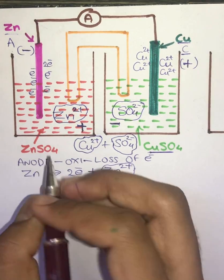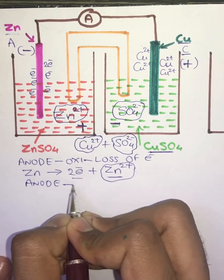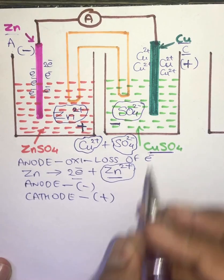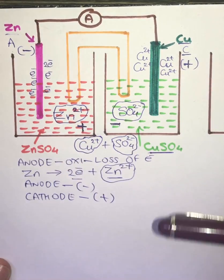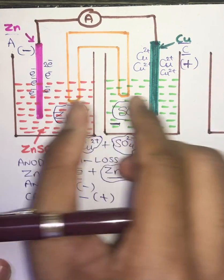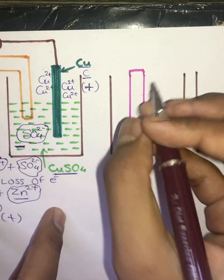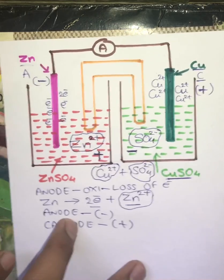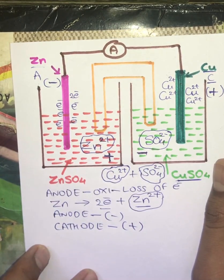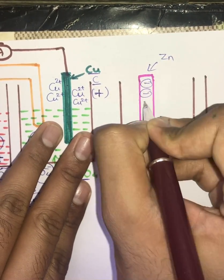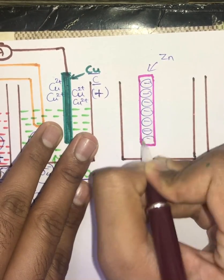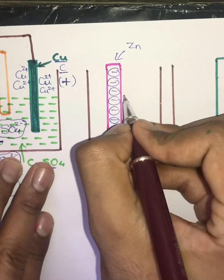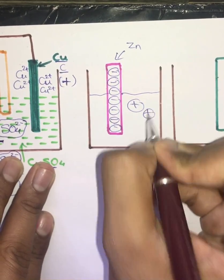So we now know that the anode is negatively charged and the cathode is positively charged. I will now draw a similar figure where I separate these two half-cells. The Zn electrode is negatively charged, so instead of drawing it I'll consider this to be a negatively charged electrode, dipped in a solution which is positively charged.